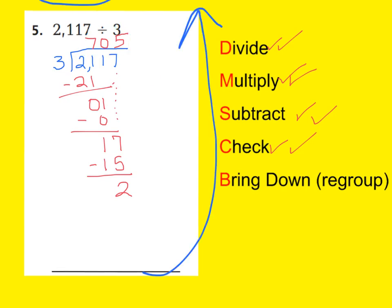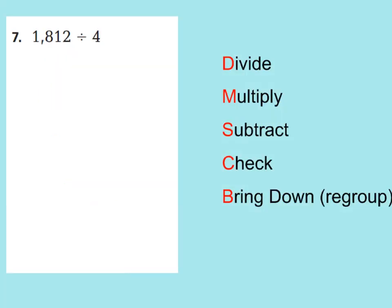Let's take a look at question number 7. It's written horizontally, but that's okay — we will just rewrite it as 1,812 divided into 4 groups. Go ahead and try this on your own, follow your division steps, press pause, and then we'll check it together.